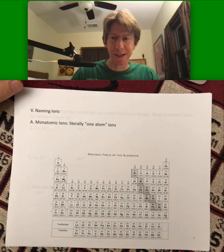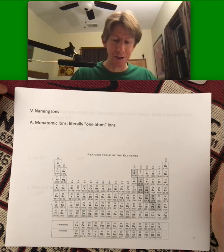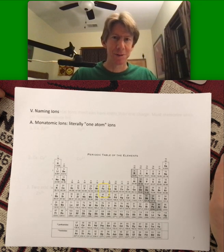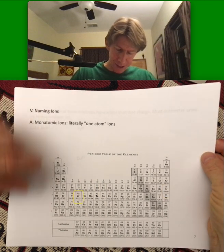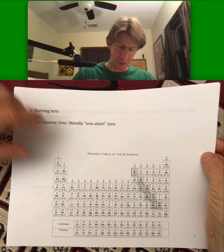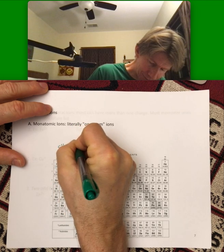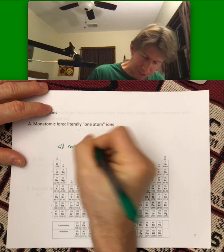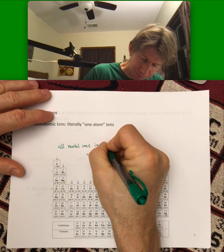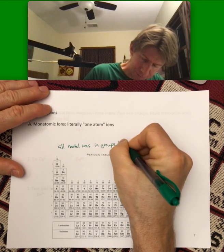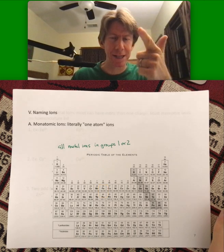Alright, naming ions. So monatomic ions, literally one of my favorite words, one atom ions. And so all metal ions in groups one and two, the name of the element is the name of the ion.